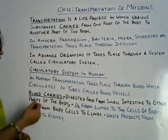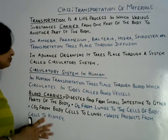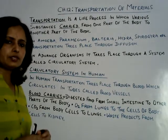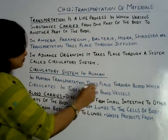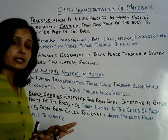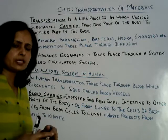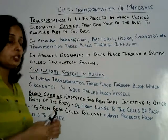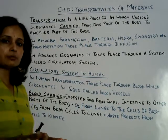Now let us discuss about the circulatory system in humans — how circulation takes place in the human body. In humans, transportation takes place through blood. Blood is a fluid found in our body that runs in tube-like structures called blood vessels. Blood carries each and every material from one part of our body to another, whether those materials are useful or waste materials.